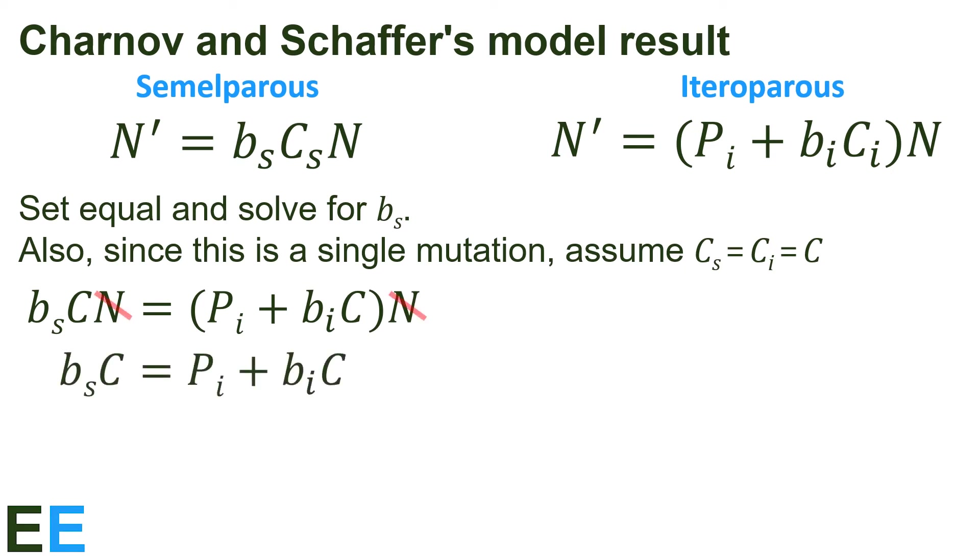Canceling the capital N on both sides gives us, B sub S times C equals, P sub I plus, B sub I times C. Dividing both sides by C gives us, B sub S equals, P sub I plus, B sub I times C, all divided by C. And writing this out in two terms and flipping the order gives us, B sub S equals, B sub I plus, P sub I divided by C.